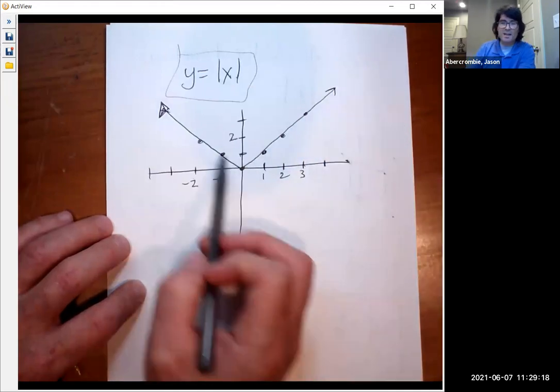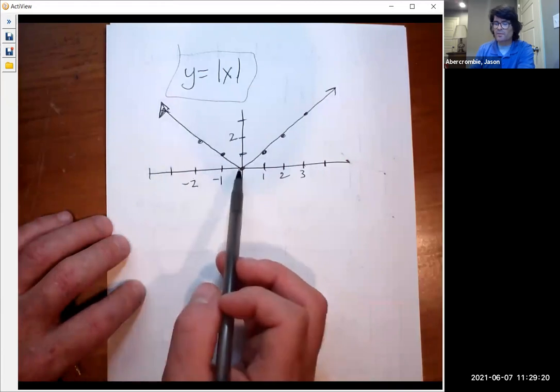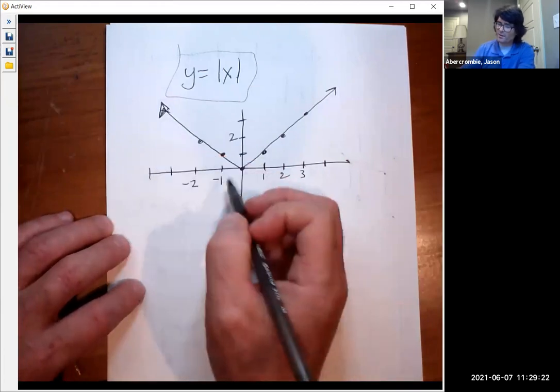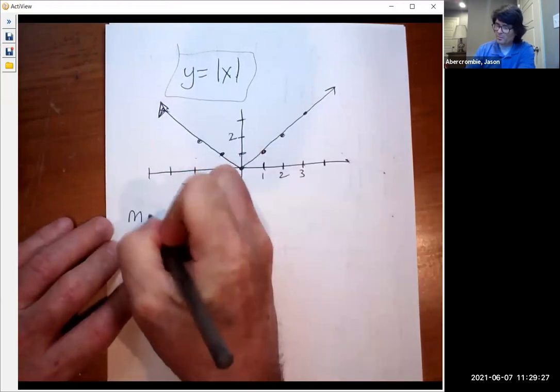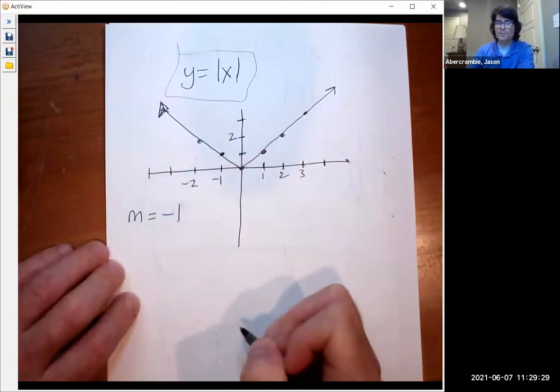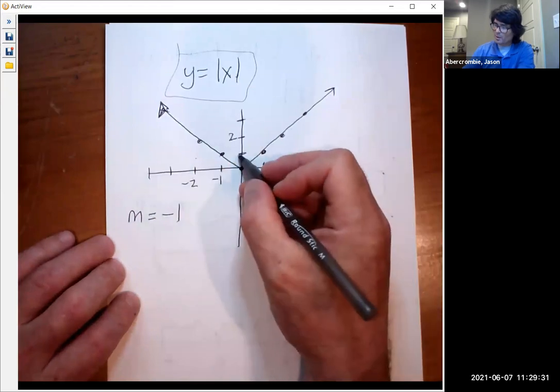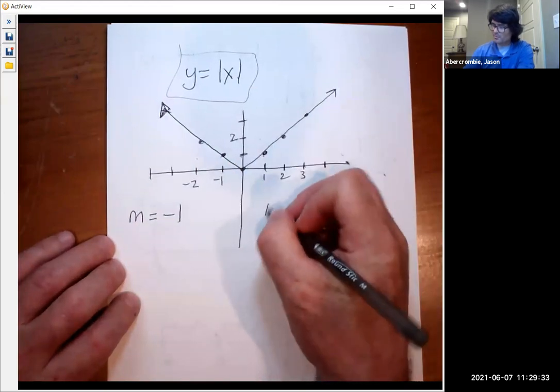And then from zero to the left, I have a different linear equation. So on this side, notice the slope down one over one. Here, my slope is negative one. And here, my slope up one over one is positive one.